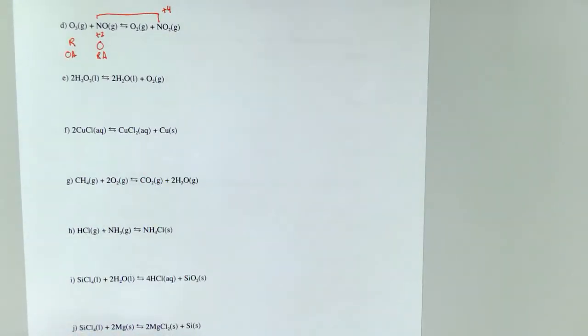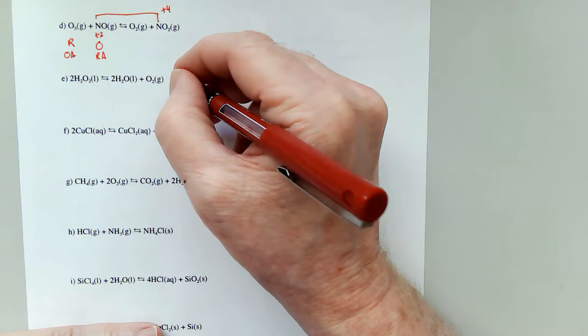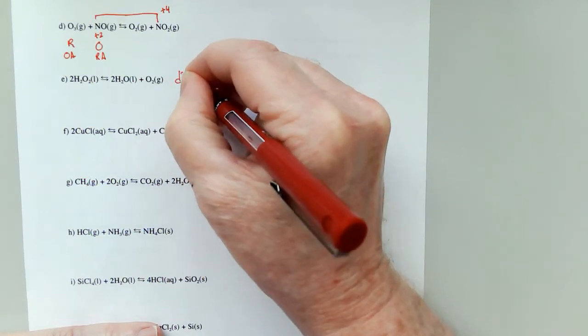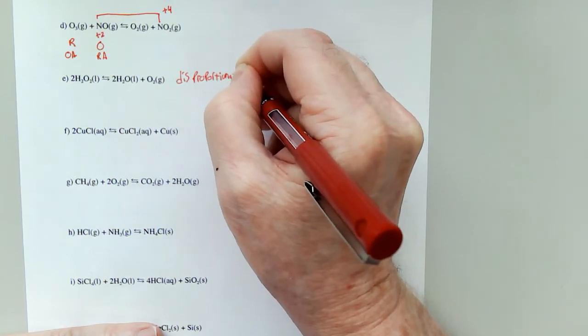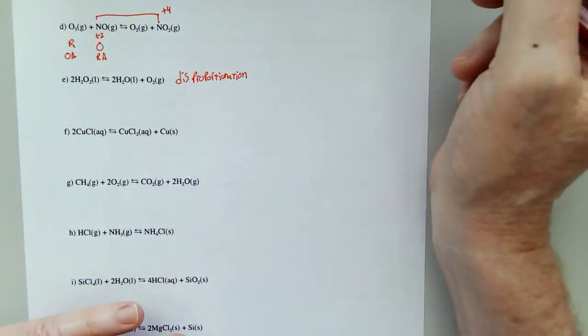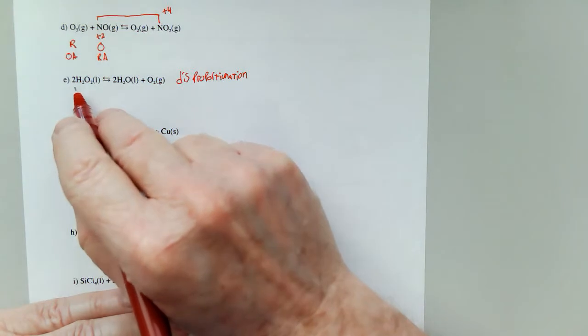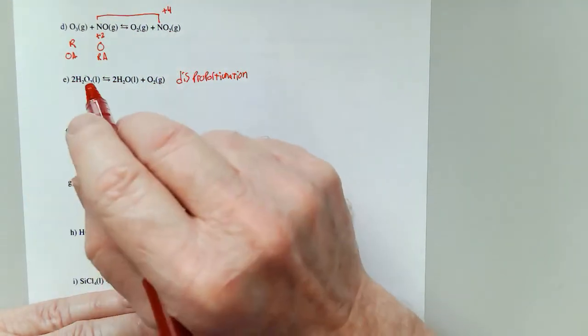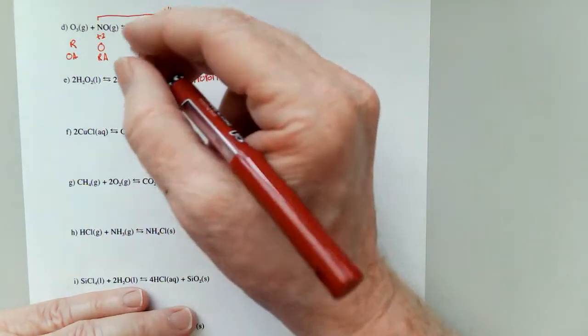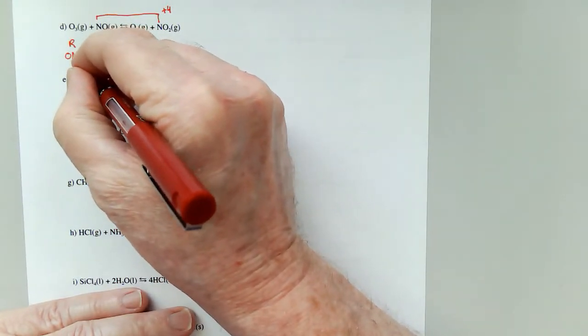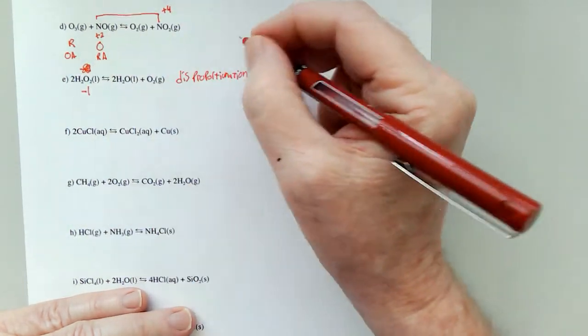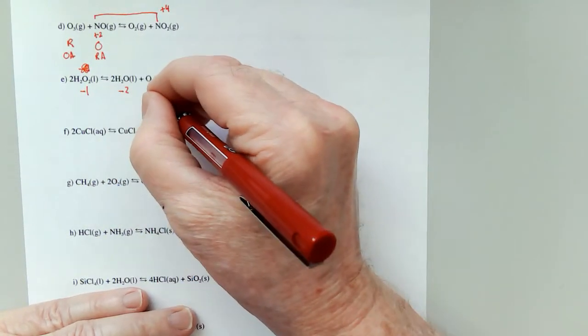The magic word here is for E, disproportionation. What that means is the same species, H2O2, is both oxidized and reduced. The oxygens here in hydrogen peroxide are negative one, and here it's a negative two, and here it's a zero.